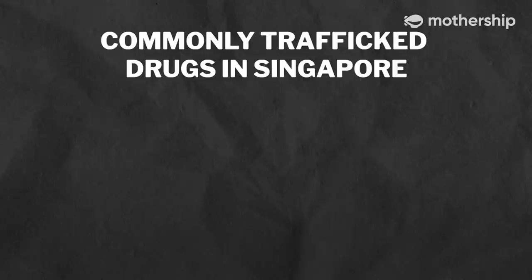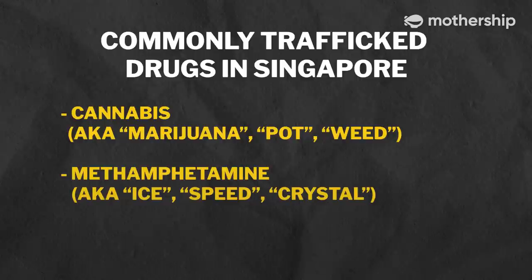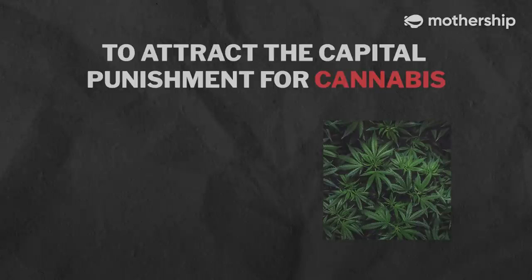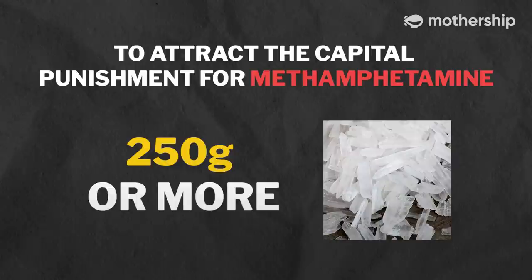Some of the more commonly seen drug types would be cannabis, methamphetamine — or what is commonly known as ice — and heroin. For cannabis to attract the capital punishment, the net weight must be 500 grams. For ice, the net weight must be 250 grams. And lastly, for heroin, it must be 15 grams or more.